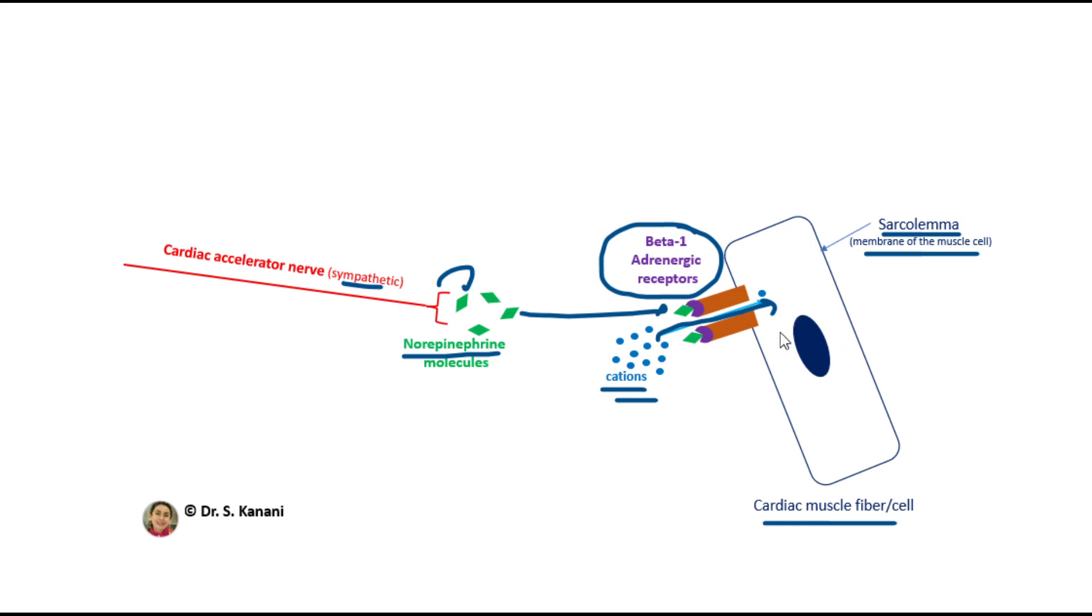So that's the reason that when cardiac accelerator nerves send signals, they can stimulate cells that we have in SA node, AV node, and also in the myocardium of the chambers.